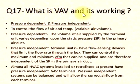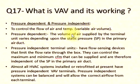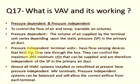Q17: What is VAV and its working? Pressure dependent and pressure independent — used to control the flow of air and temperature. Variable Air Volume: Pressure dependent — the volume of air supplied by the terminal unit varies depending upon the static pressure (SP) in the primary air duct. Pressure independent — terminal units have flow sensing devices that limit the flow rate through the box, controlling the maximum and minimum CFM supplied, independent of SP in the primary air duct.